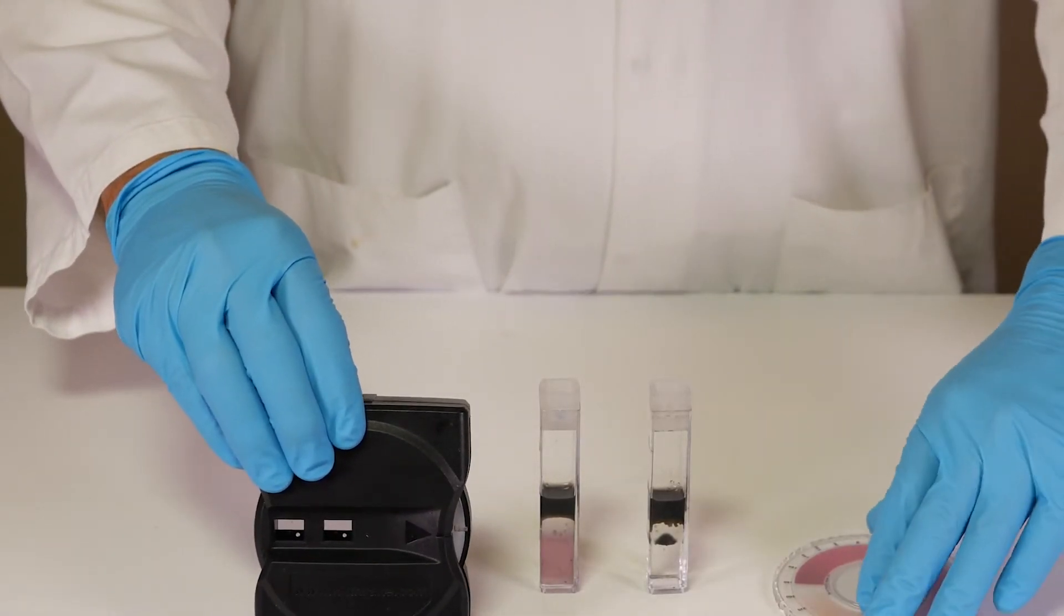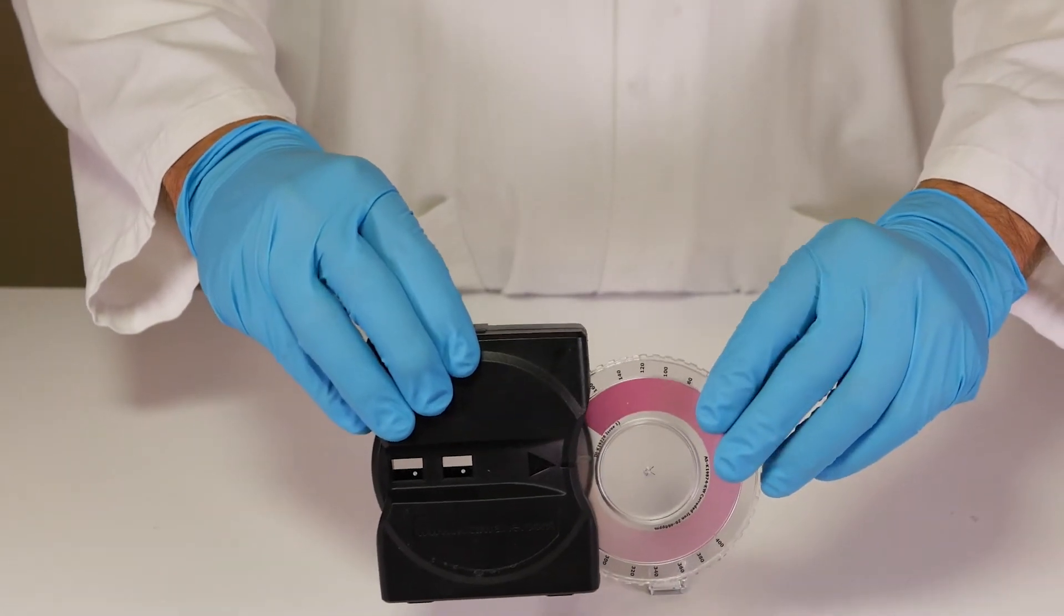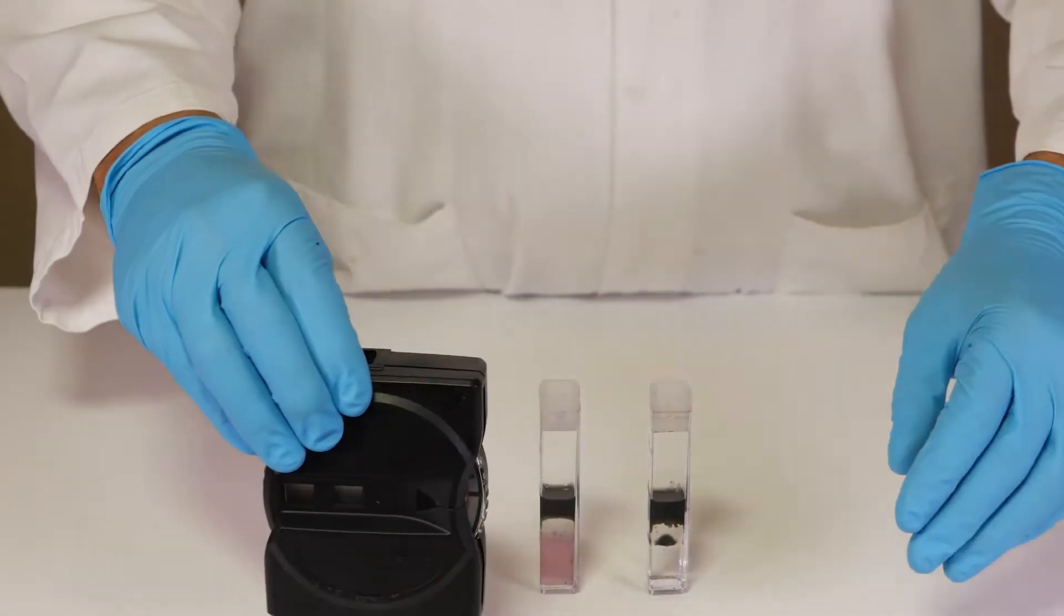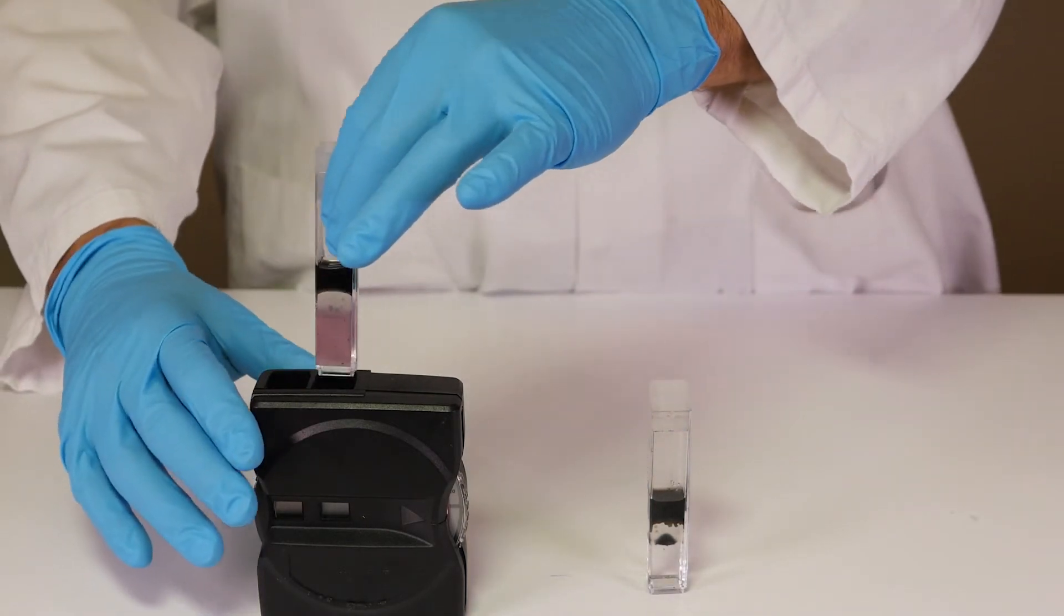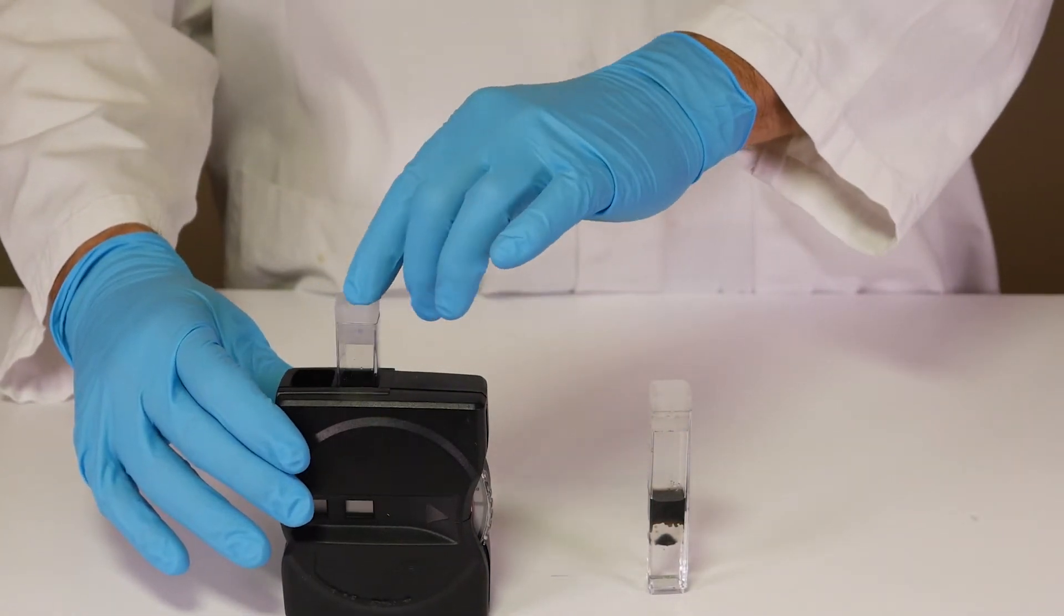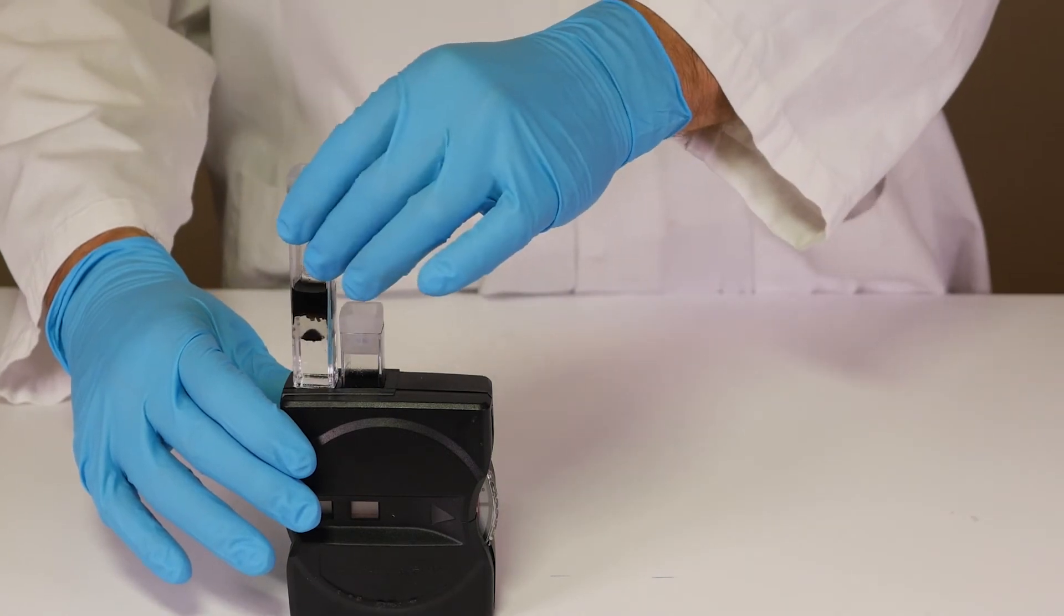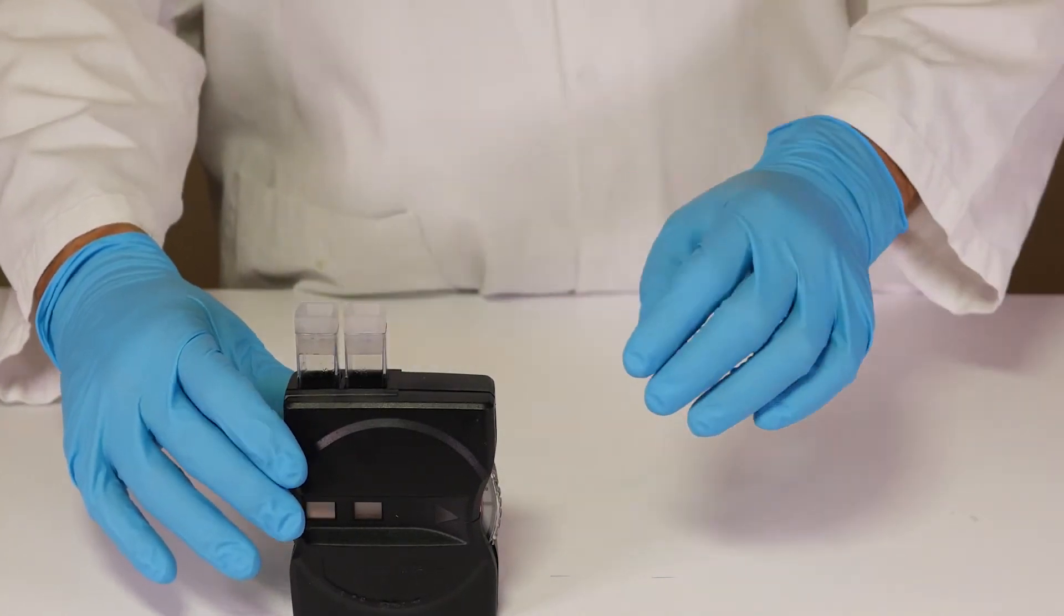Insert the colour wheel into the comparator. Place the cuvette containing reagent two into the centre most slot, and the cuvette with reagent three into the outermost slot.